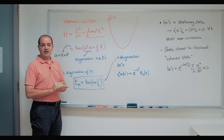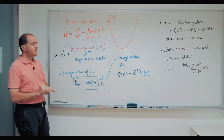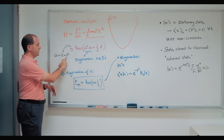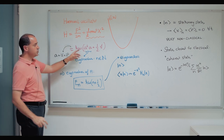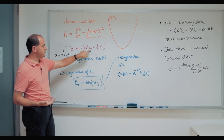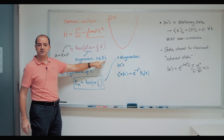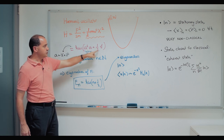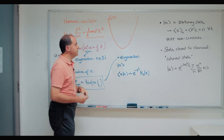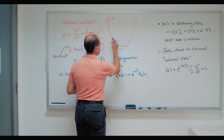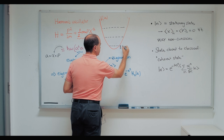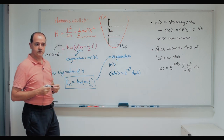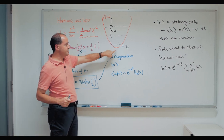We are going to solve the eigenvalue equation using the method invented by Dirac, who noticed that this Hamiltonian can be written in terms of an operator a, which — up to some constants — is something like position plus imaginary number times momentum. With some clever algebra, you can find that the eigenvalues of a†a are all the natural numbers — positive integers or zero. Therefore, the eigenvalues of H are ℏω(n + 1/2). These energy levels are equally spaced by ℏω, with the ground state displaced from zero by ℏω/2.